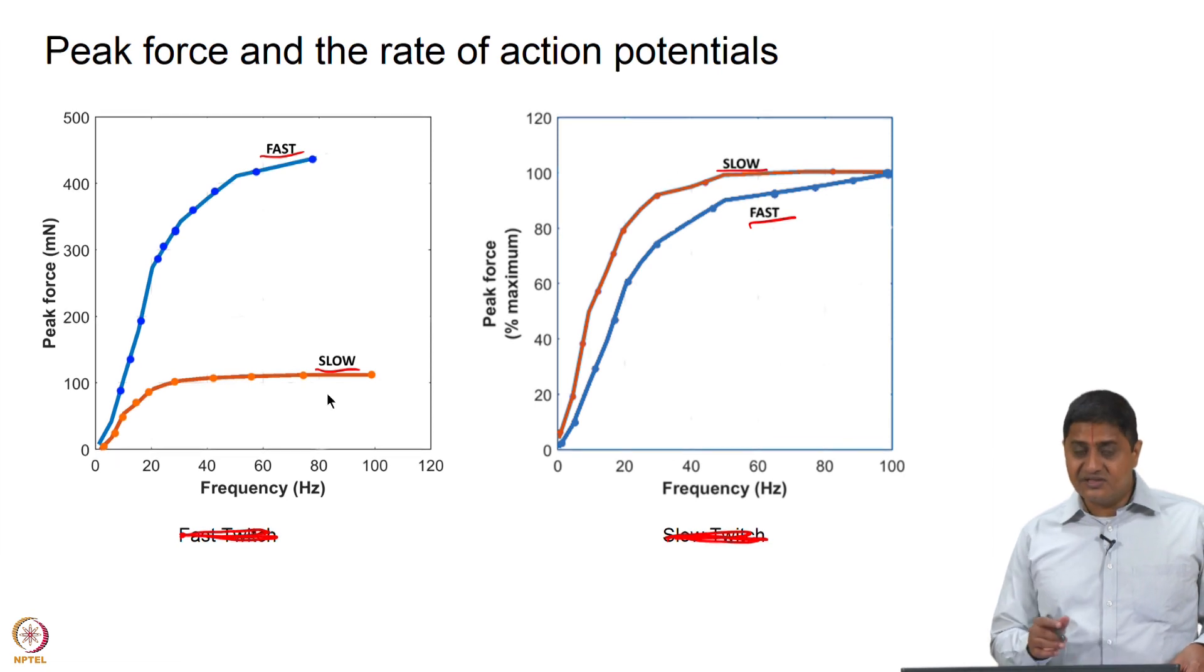Try to read this plot in the context that as the frequency in slow twitch fibers increases, the peak force in milli Newton goes to this level, and in fast twitch fibers it increases at that level.